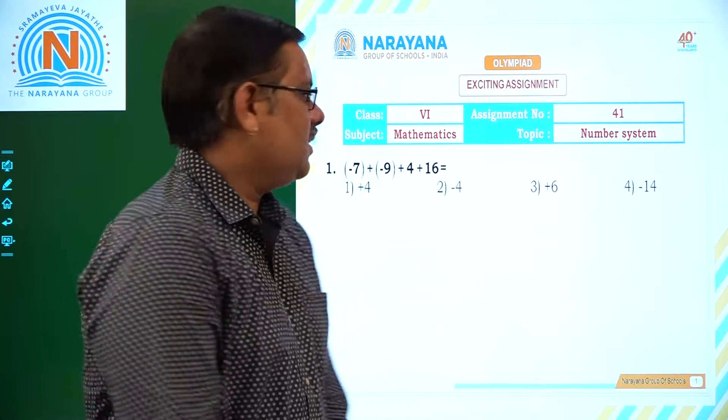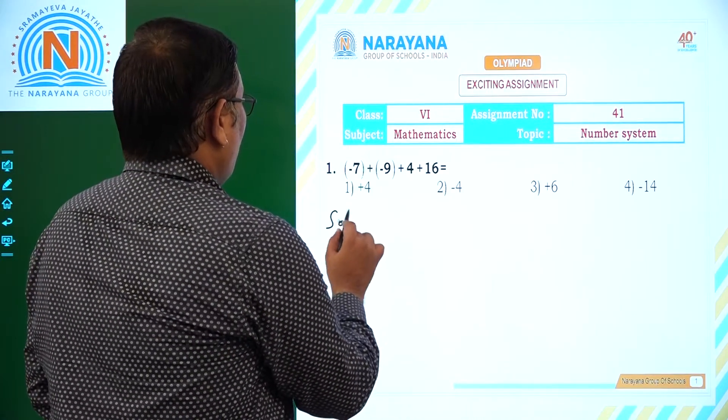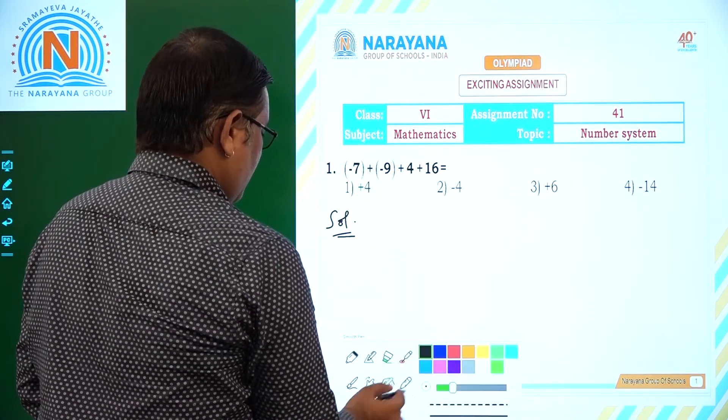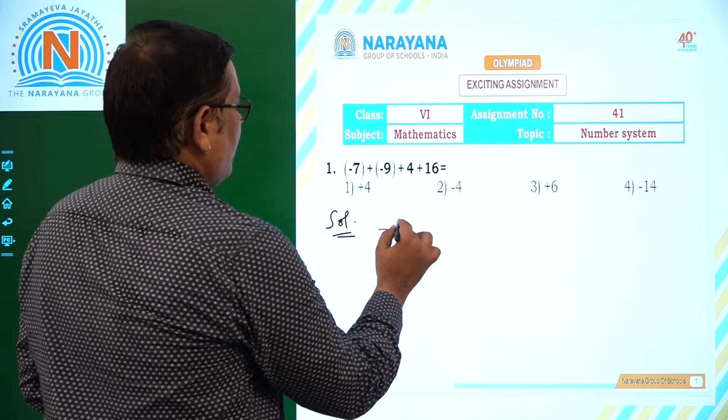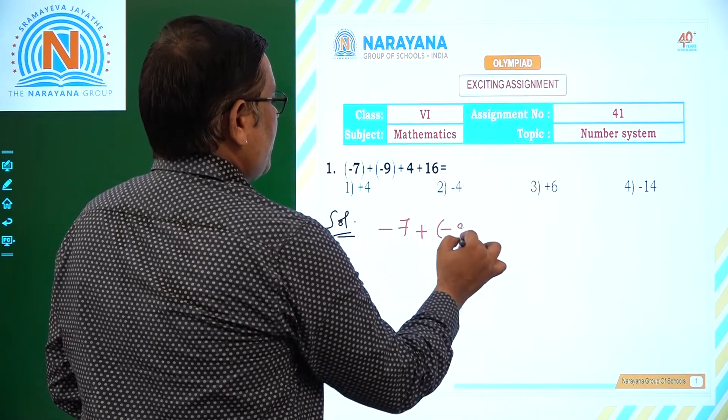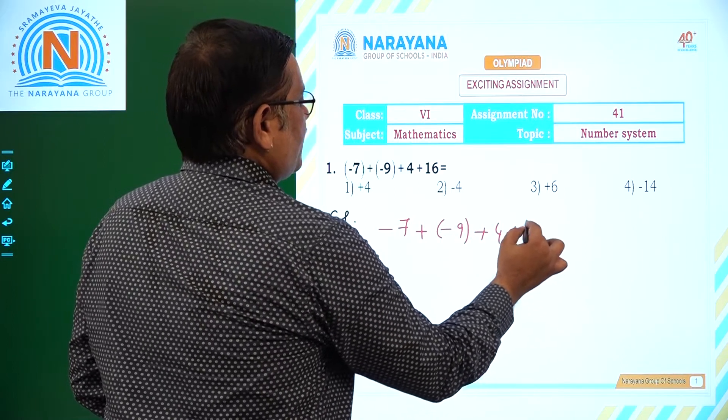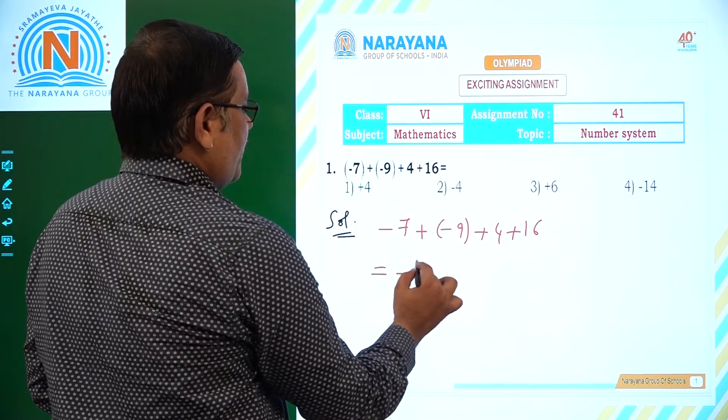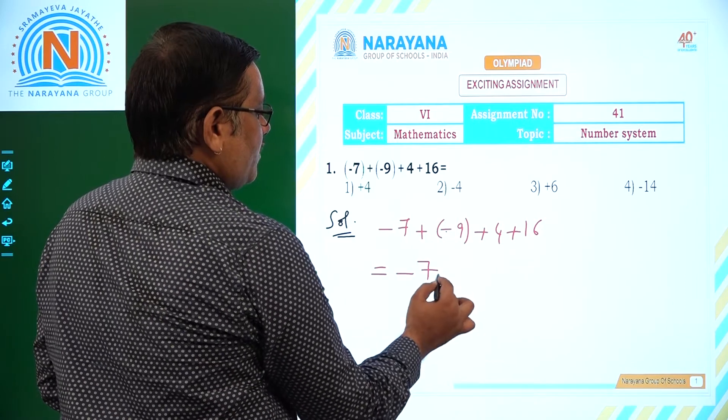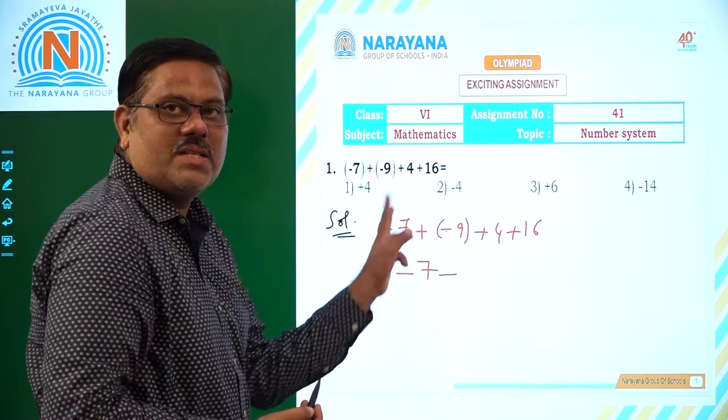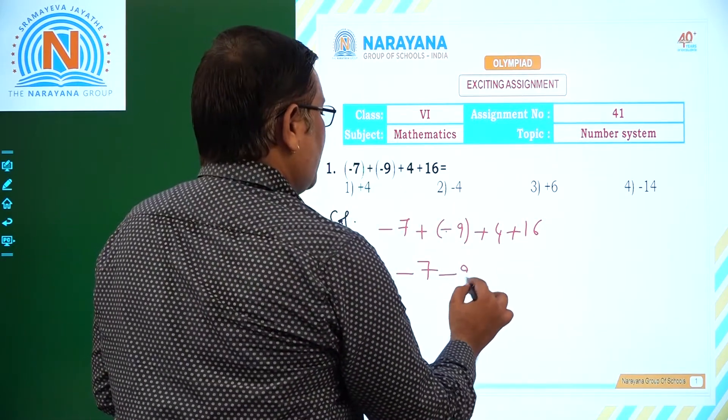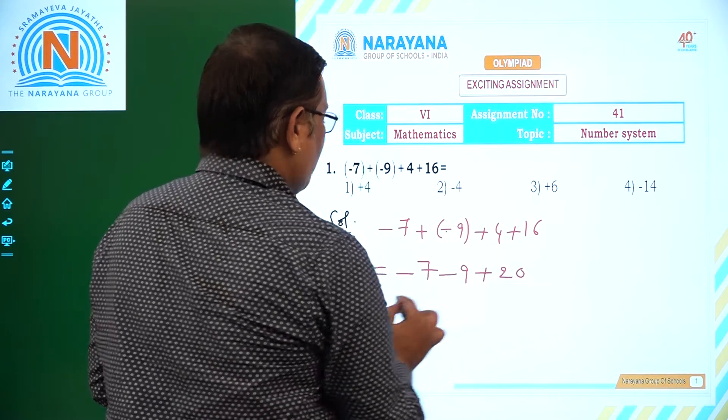Now let us see the first question. The value of -7 + (-9) + 4 + 16 is asking. That is otherwise -7 plus, into minus is minus. Minus into plus or plus into minus, both are minus. So -9 + 4 + 16, that is 20.